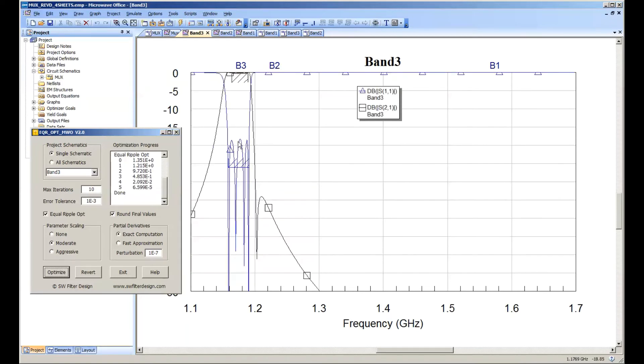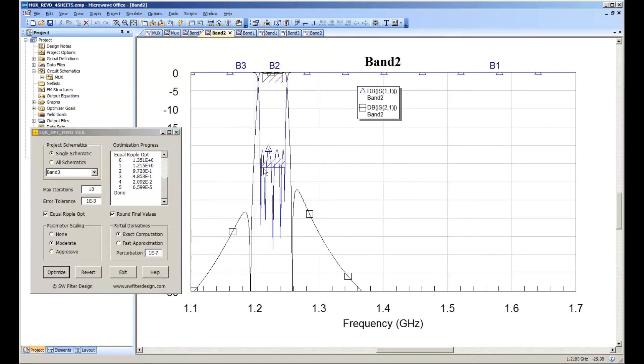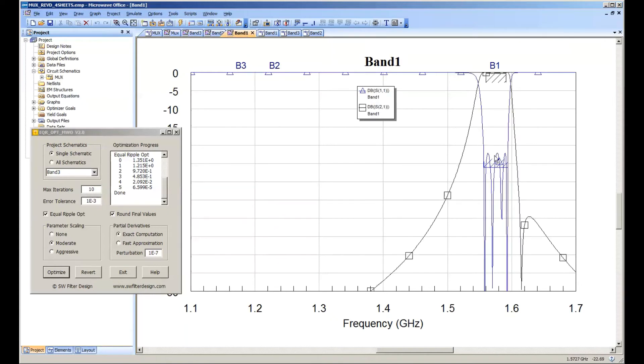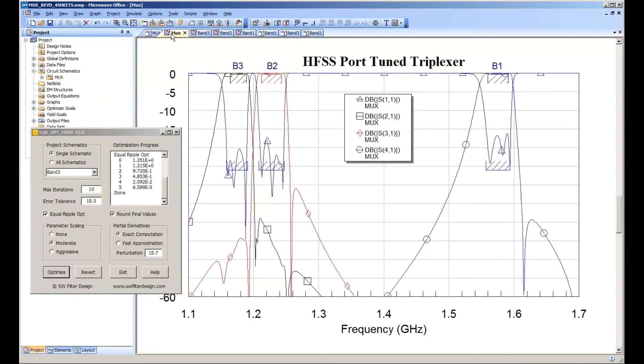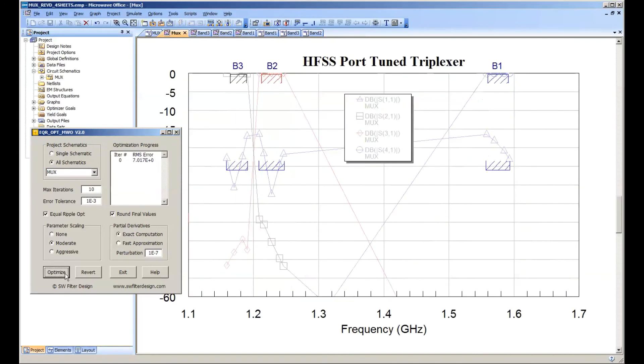Now the return loss levels aren't perfect here because I've already changed the tap points in the individual filters to work correctly in the mux, in the triplexed version. But other than that, we're back to a known starting point here. And now we can re-optimize it back to the triplexed condition.